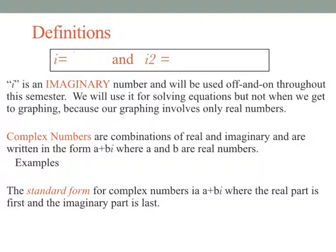The square root of negative one we're going to define as i. Up to this point, whenever we have a square root of a negative, we haven't been able to give an answer. Part of that same definition is that i squared equals negative one. Those are two parts of a definition that you just need to memorize.